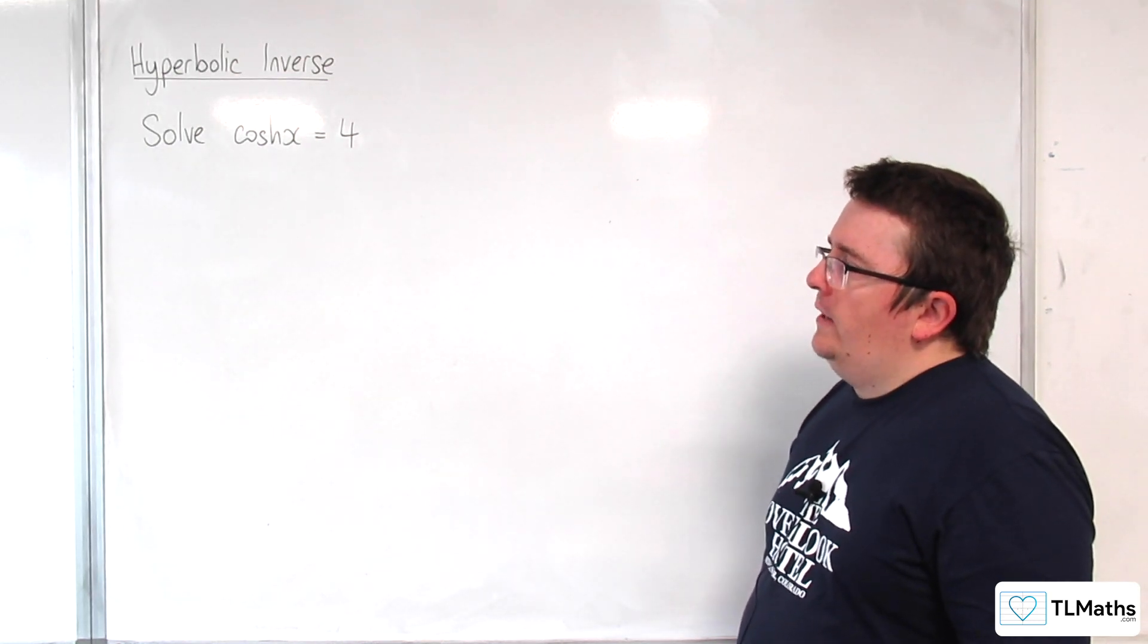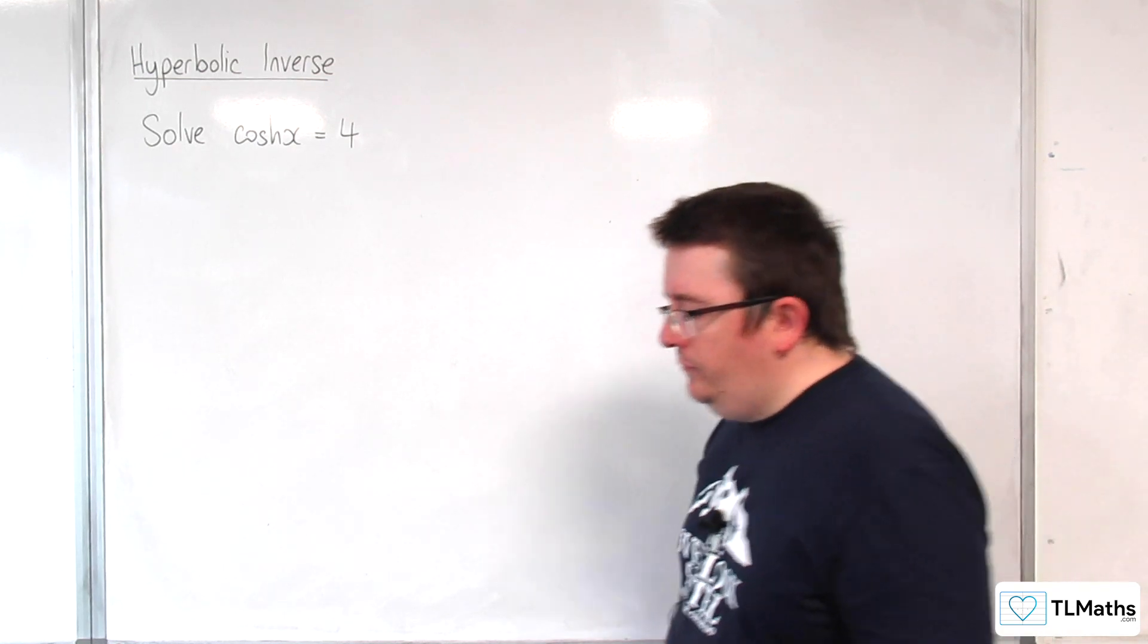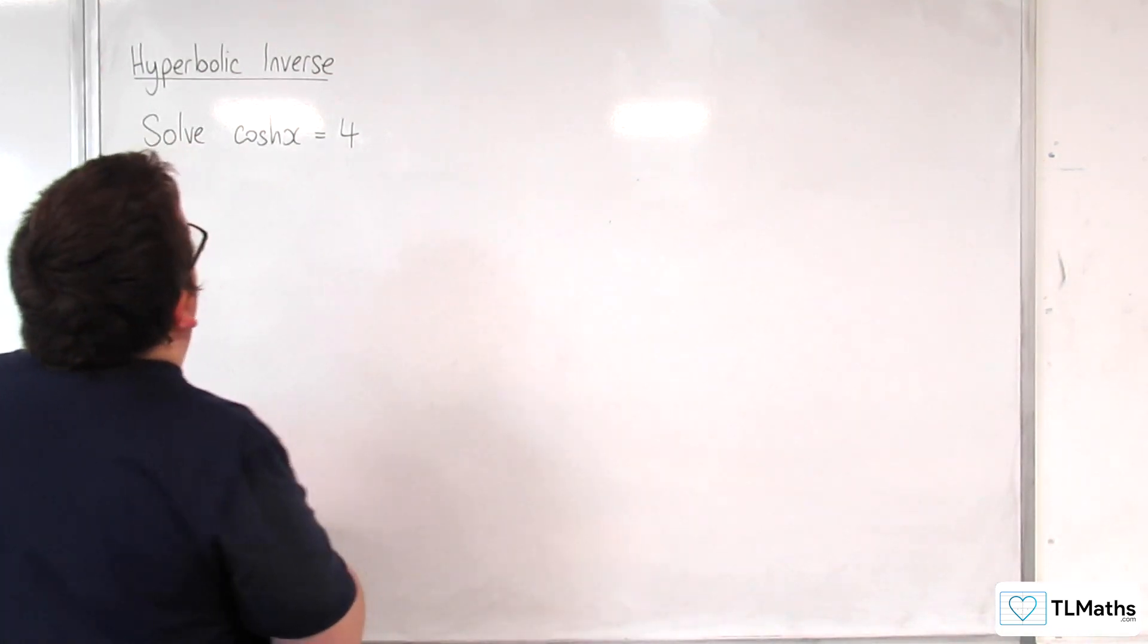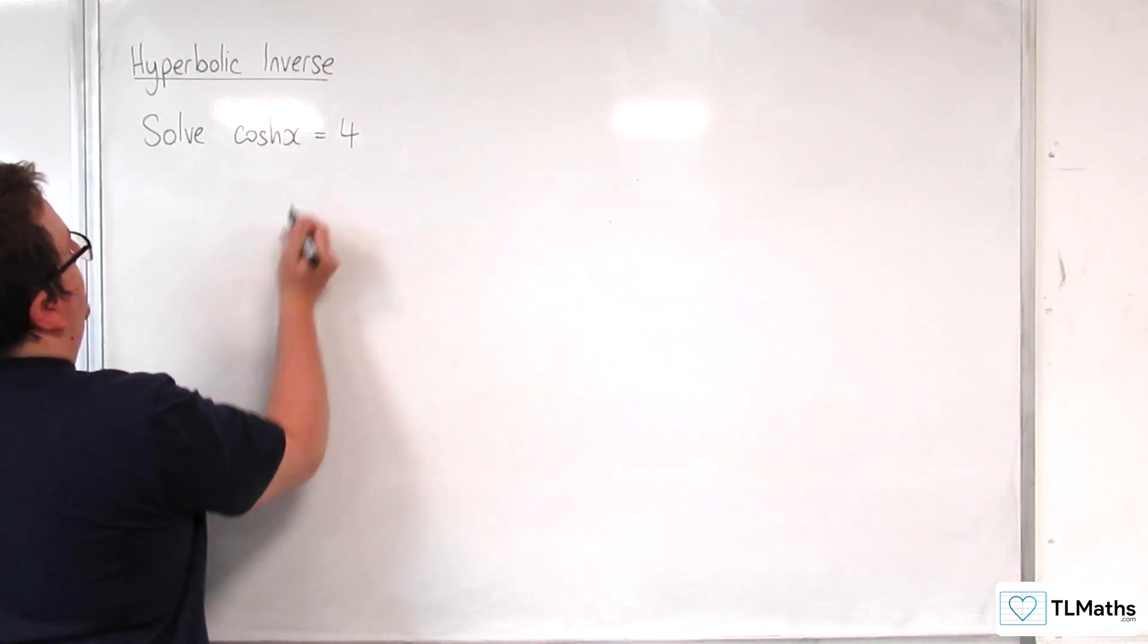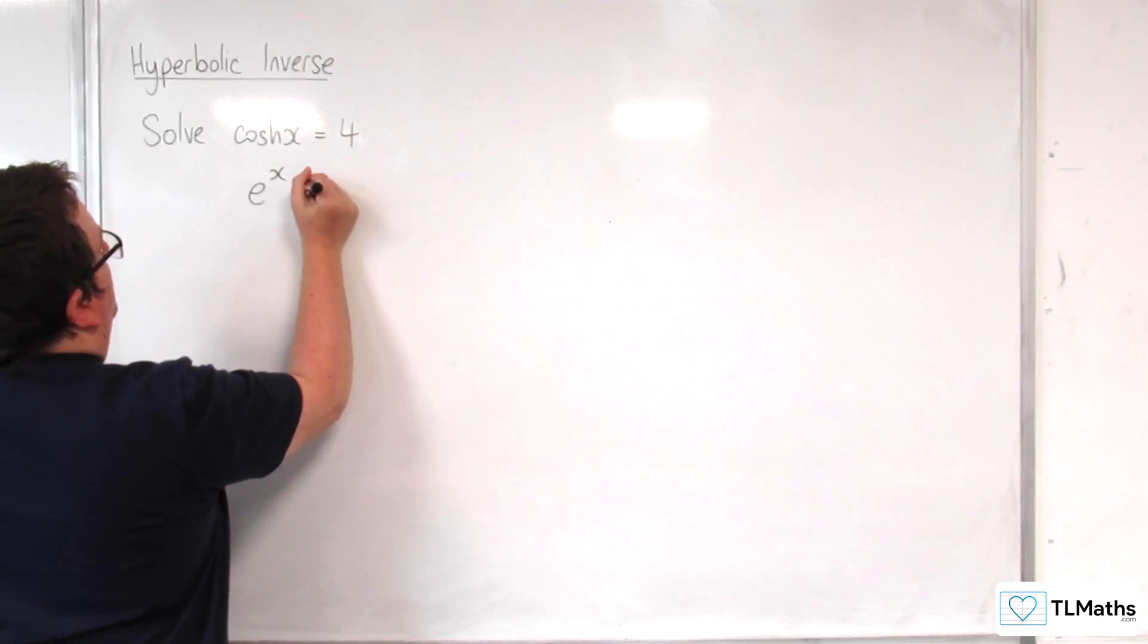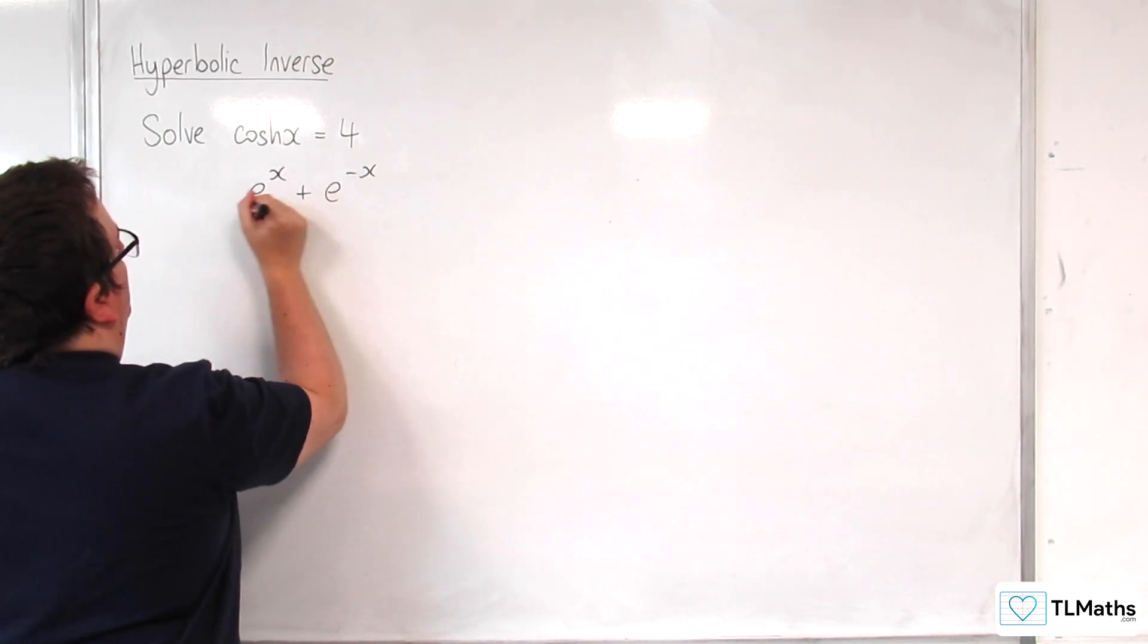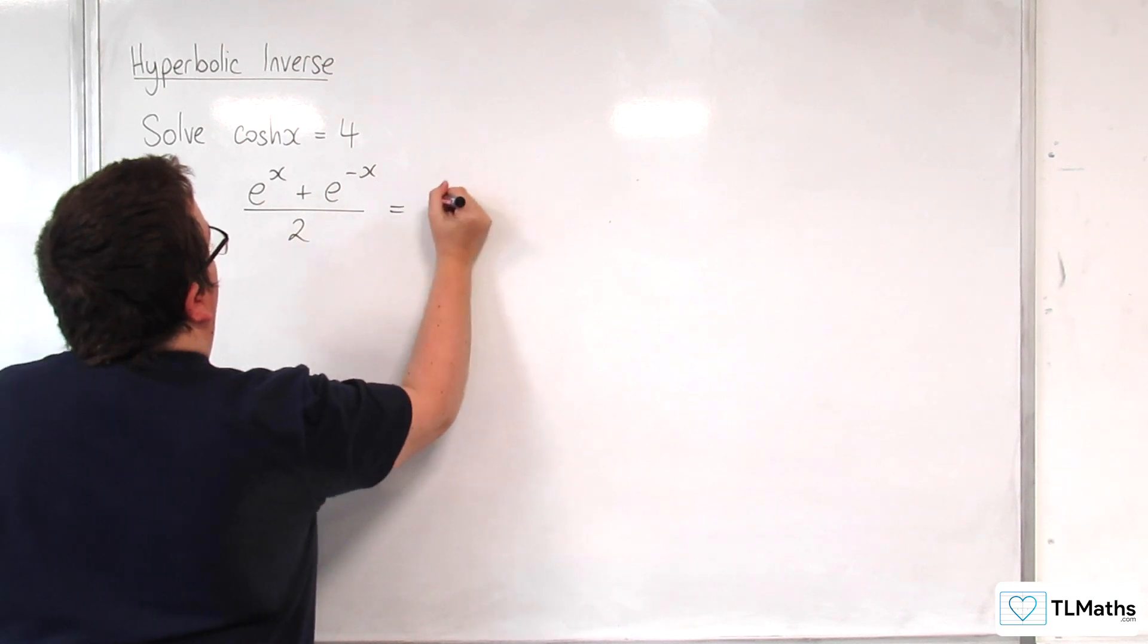So to solve cosh x is equal to 4, what I can do is I can write cosh of x as e to the x plus e to the minus x over 2 as equal to 4.